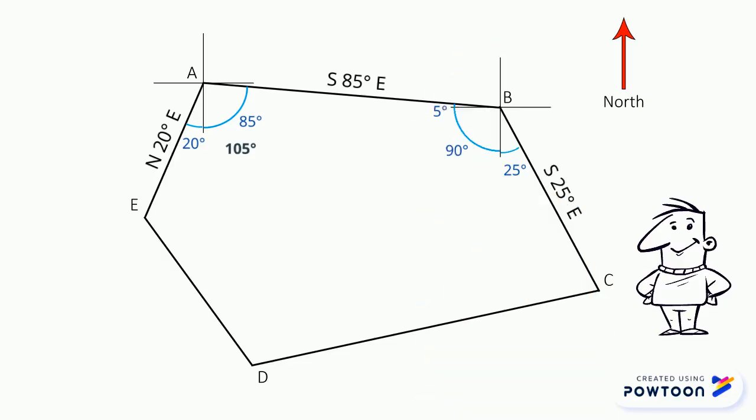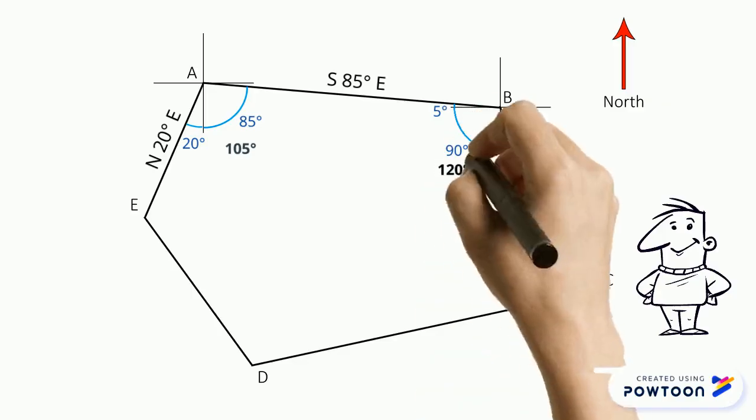Since its alternate angle measures 5 degrees, we can now add 5 degrees plus 90 degrees plus 25 degrees, which gives us the interior angle of point B, which is 120 degrees.